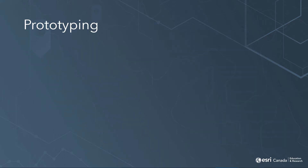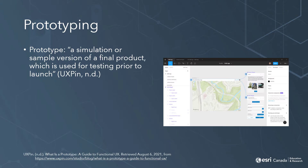As we get started, we need to define what a prototype is exactly, and look at the different forms that they can take. The company UXPIN, which develops prototyping software, defines a prototype as a simulation or a sample version of a final product, which is used for testing prior to launch. It's like designing a building using blueprints, physical models, or virtual 3D models prior to actually constructing the building in the real world. And creating user interface prototypes is important for the same reason.